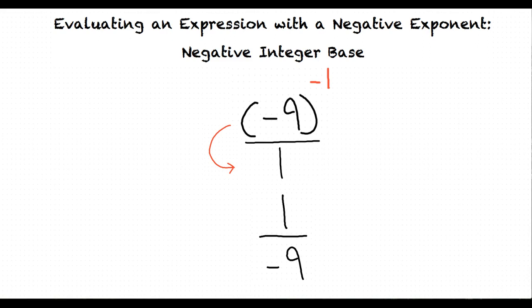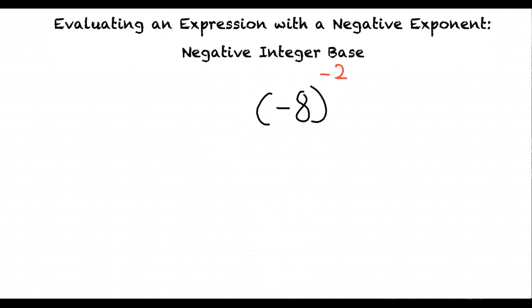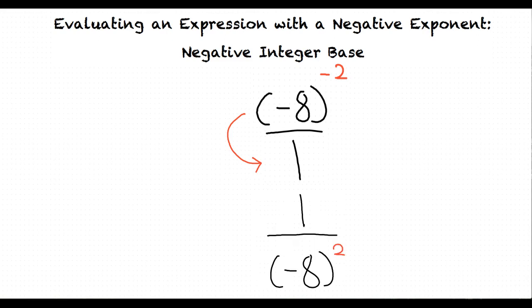Would there be an instance where we would need to change the sign of the integer? We do not change the sign when moving an integer with a negative exponent to the other side of the fraction. We only change the sign depending on what the value of the exponent is. Let's look at our next example to elaborate further: negative 8 to the power of negative 2. We start this problem by moving our integer and exponent to the denominator.